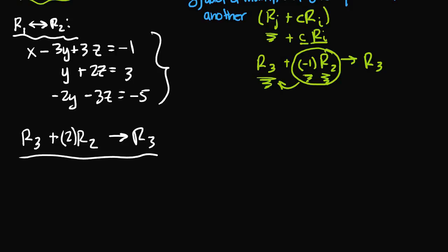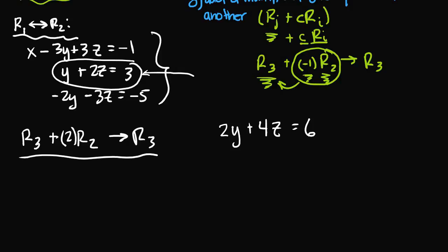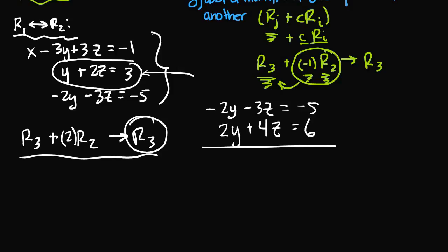Row two is y plus 2z equals three, so two times row two gives 2y plus 4z equals six. Row three is negative 2y minus 3z equals negative five. Adding these together: negative 2y plus 2y is zero, negative 3z plus 4z is z, and negative five plus six is one. So the new row three is simply z equals one.